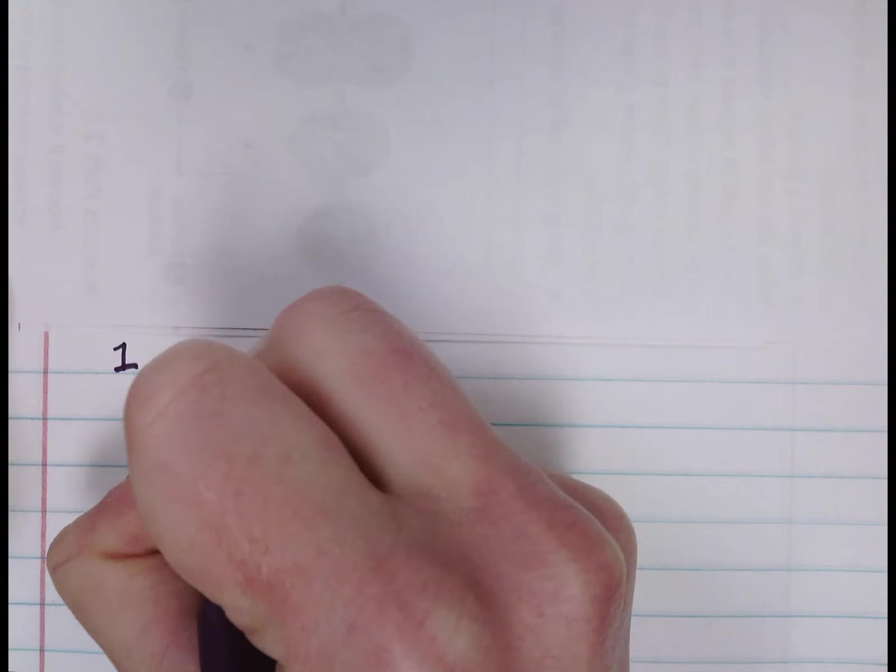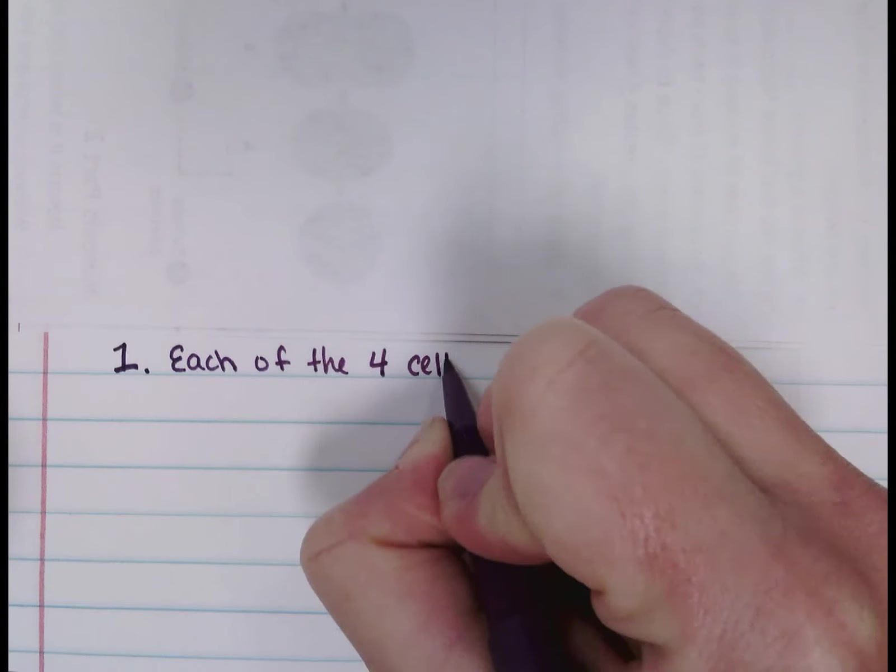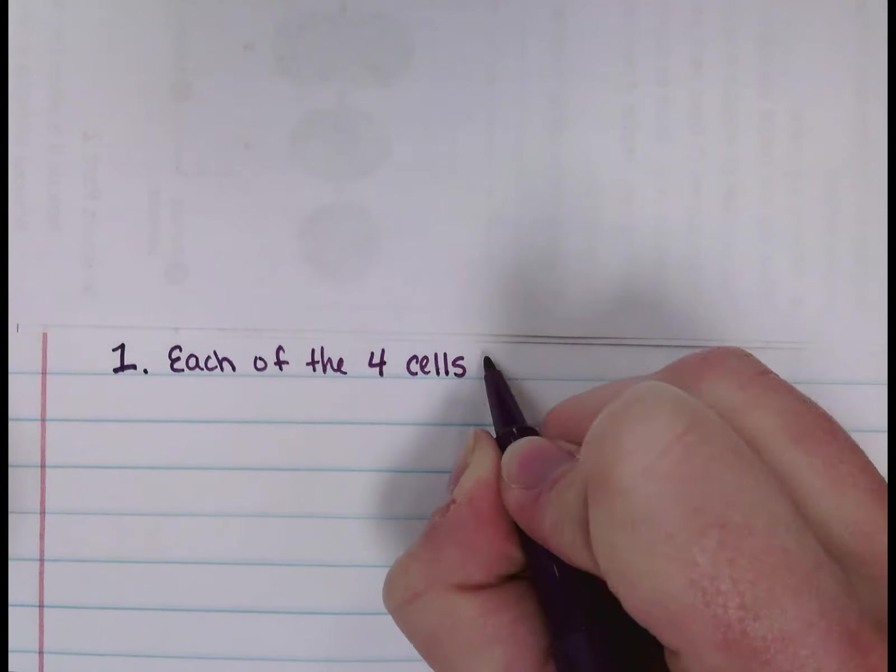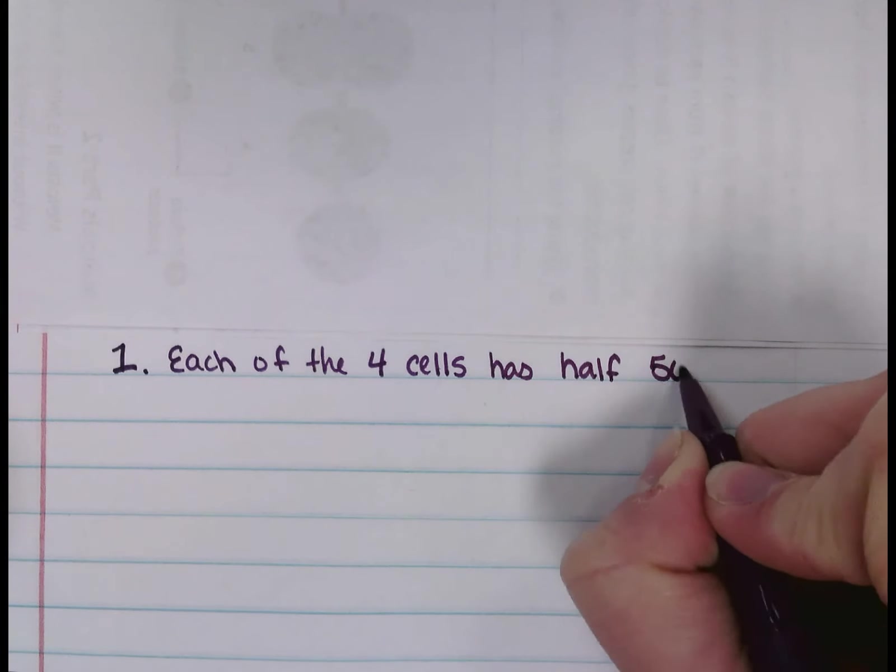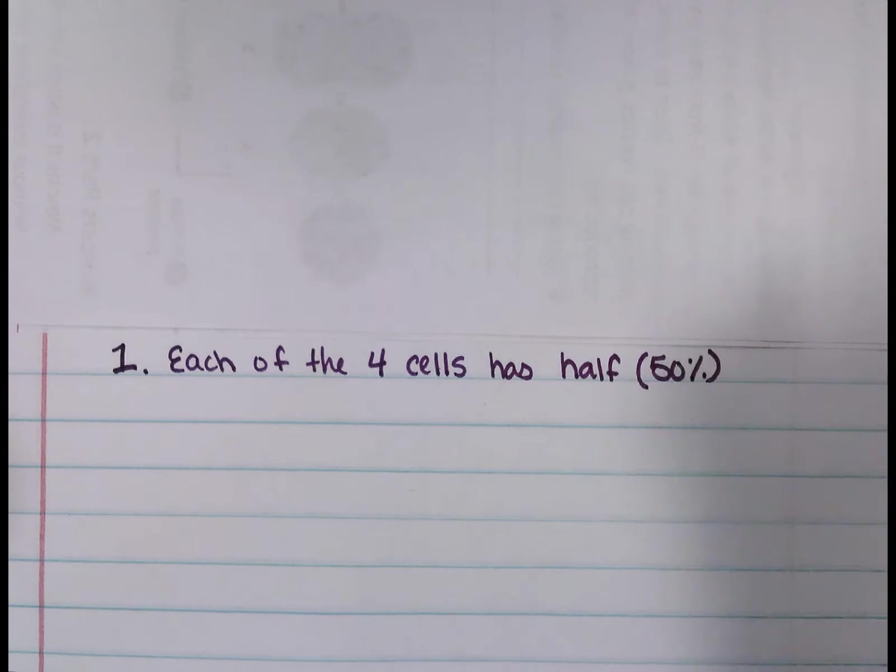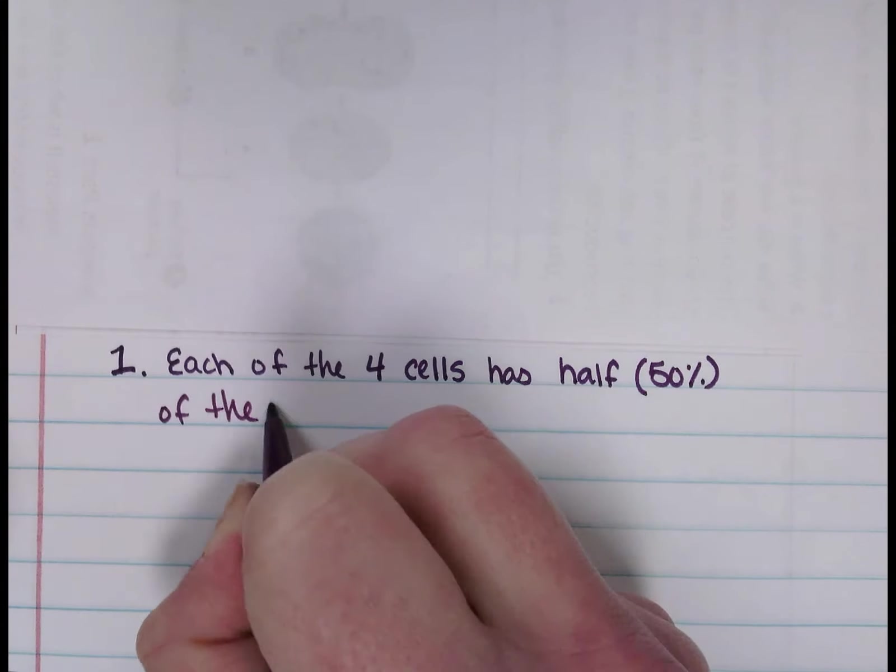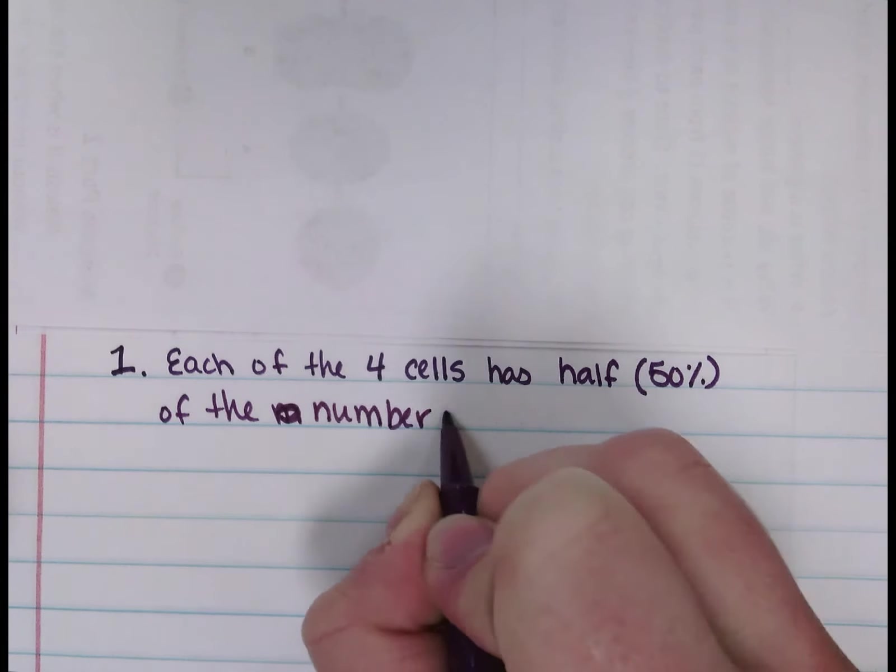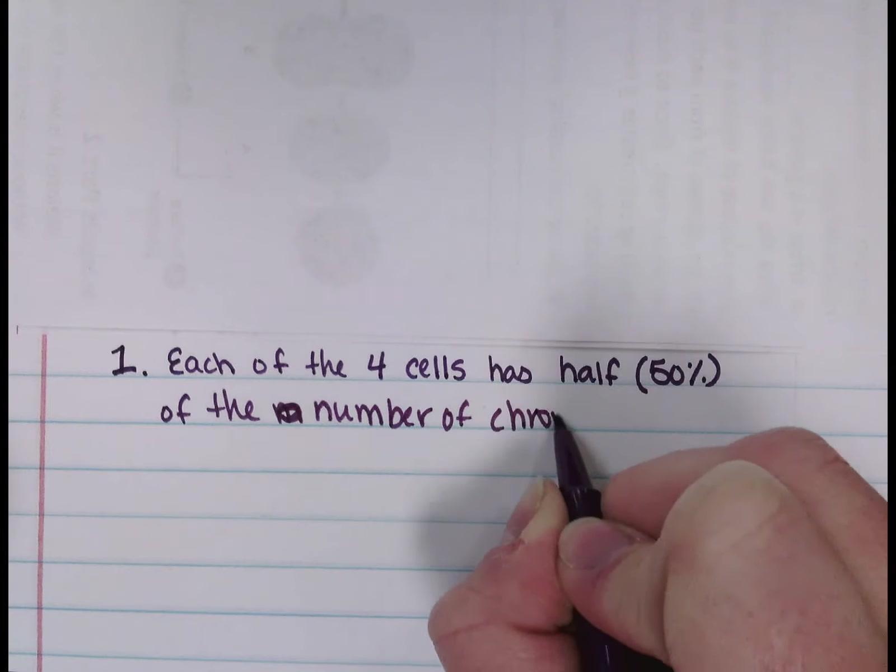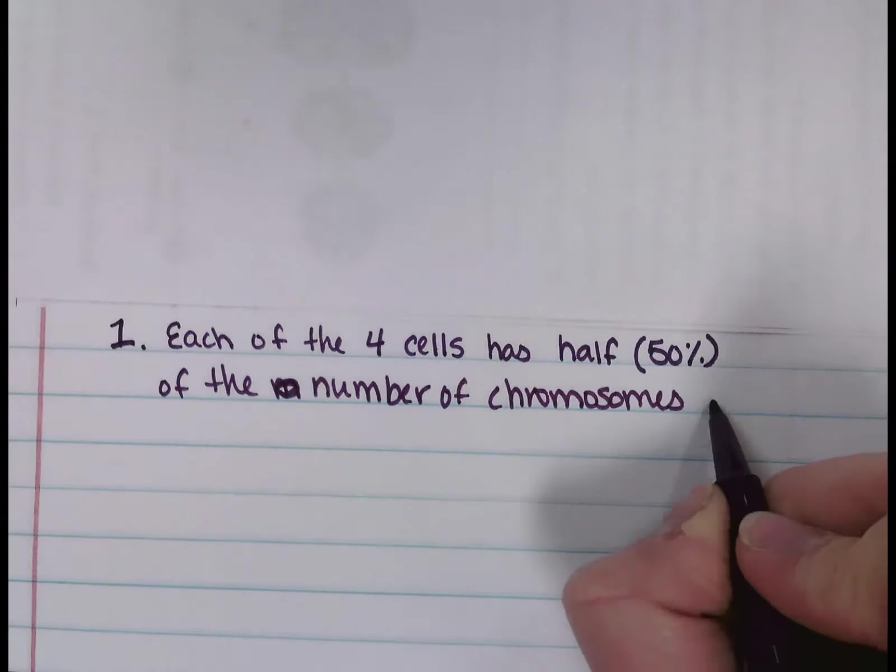Each—meiosis produces four cells—each of the four cells has half, or 50%, of the number of chromosomes as the parent cell.